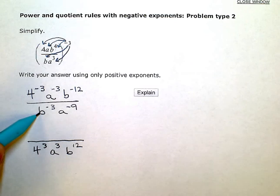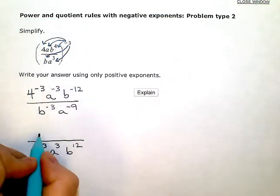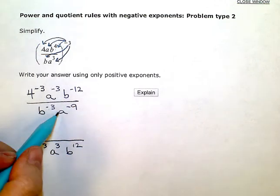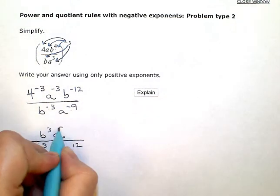Now, this b is already in the denominator. It's going to go upstairs, because it has a negative exponent. So, this will be b to the positive third power, upstairs in the numerator. And this a, negative exponent, is going to go upstairs to the positive ninth.